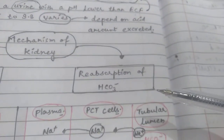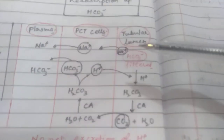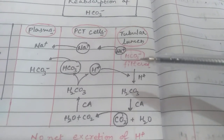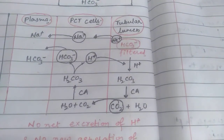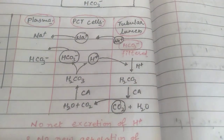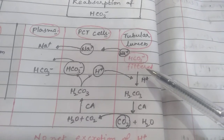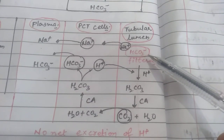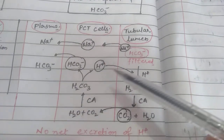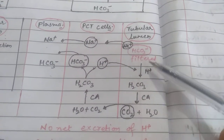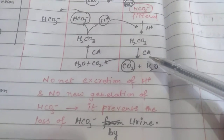Now we discuss the second process: reabsorption of bicarbonate. After filtration of blood inside the kidneys, a number of ions enter the Bowman's capsule, including bicarbonate, which comes inside the tubular lumen. This filtered bicarbonate reacts with H+ coming from the same process described above.